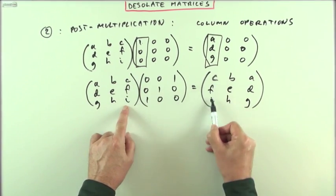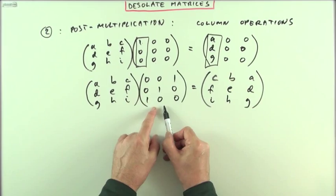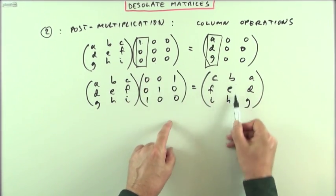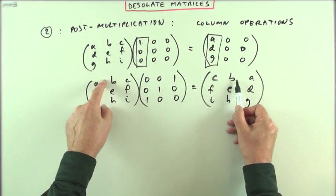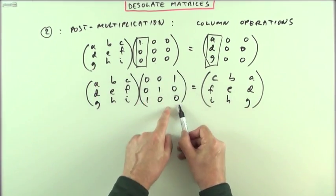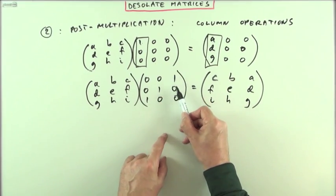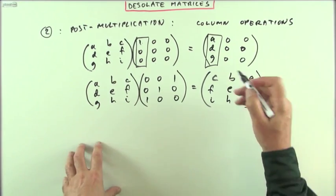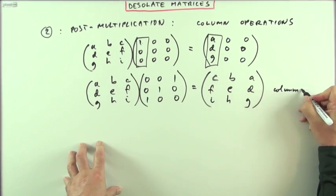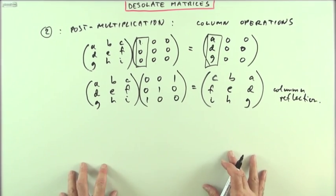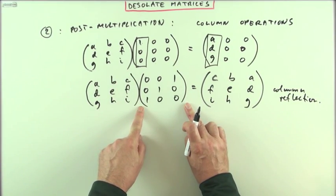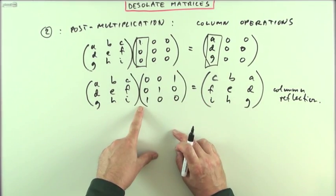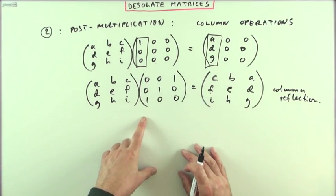The first column in the product is C, F, I. The second column says: use the second column for the second column in the answer - that's B, E, H. The third column says: use the first column and none of the other two - that's A, D, G. That's carried out a column reflection. The important point here is: if you're post-multiplying by a desolate matrix, it's column operations you'll be using, and you don't need to go through the full multiplication process - just consider what each column contributes to the columns in the answer.